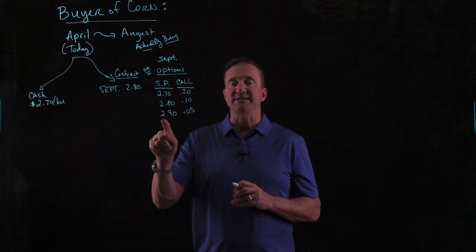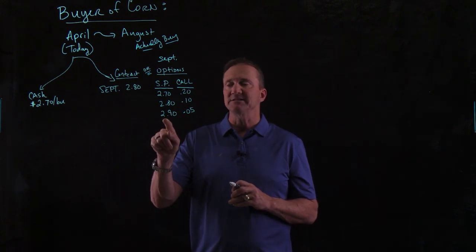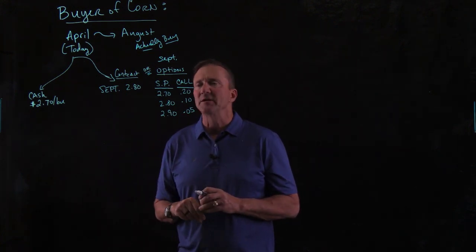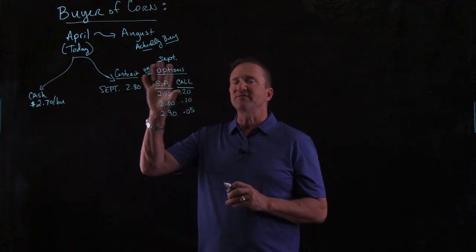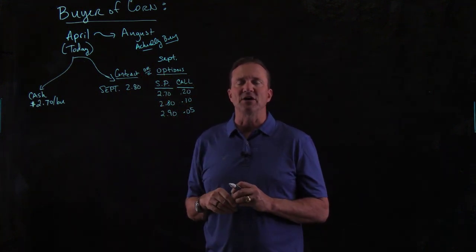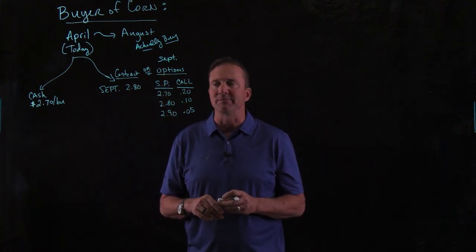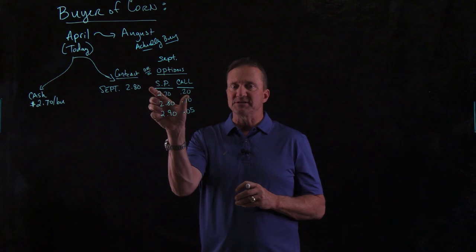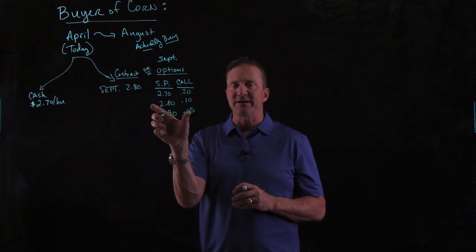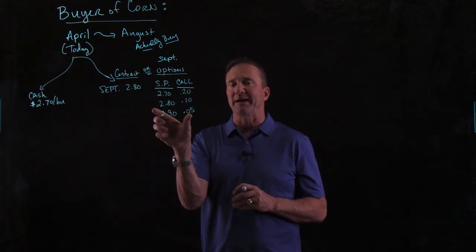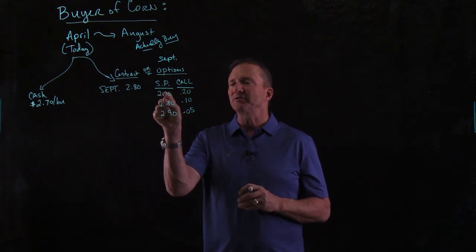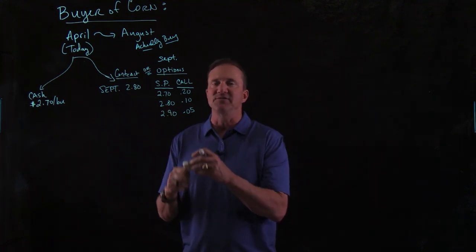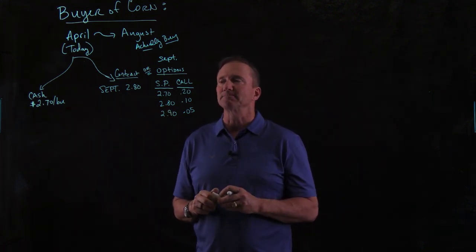$2.90 is a strike price that would cost you $0.05 to buy. This is the information you'll need to always be looking for in your problems. On options, as my introductory video said, it's a little more complicated. You have to choose which strike price you would want, and I gave you three right here.